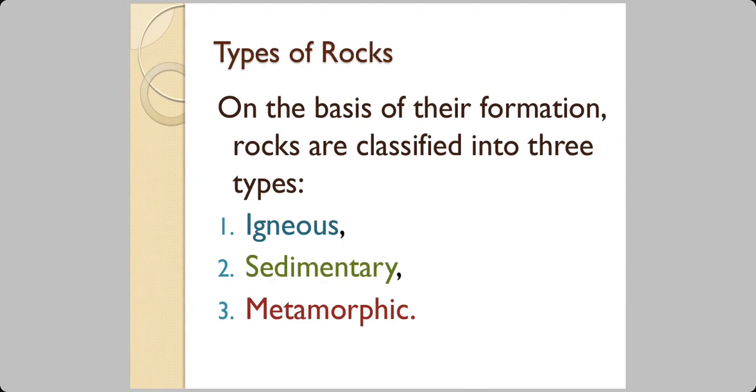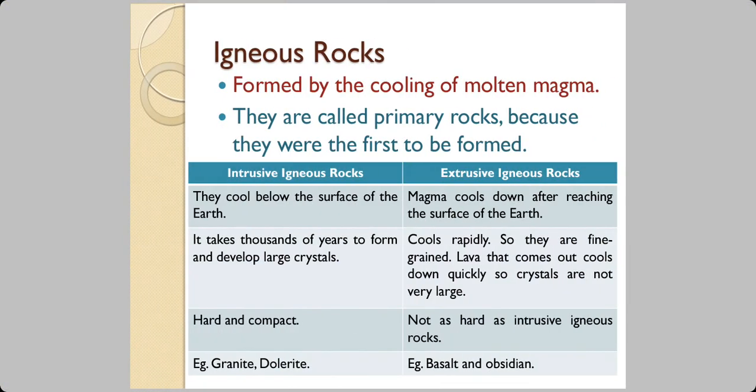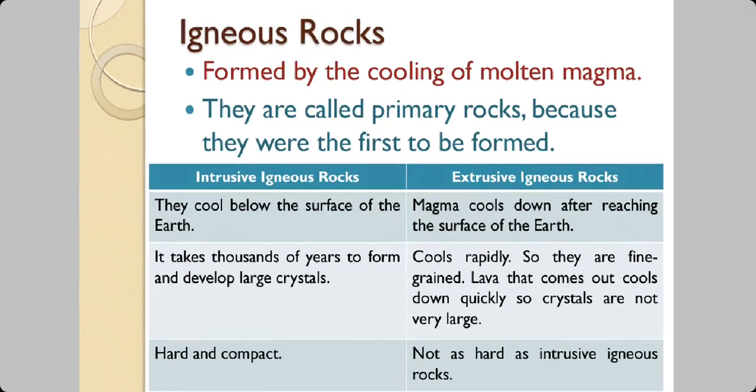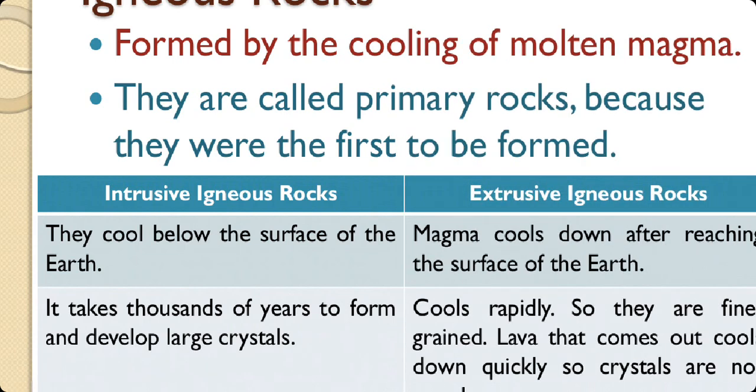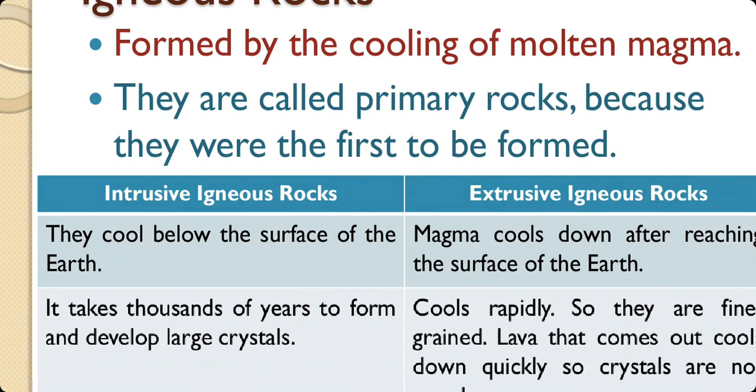Types of rocks. On the basis of their formation, rocks are classified into three types: Igneous, sedimentary and metamorphic. Igneous rocks are formed by the cooling of the molten magma. They are also known as primary rocks because they were the first to be formed. As soon as the molten magma comes out, it forms a solid mass and a hard mass. That is the igneous rock.